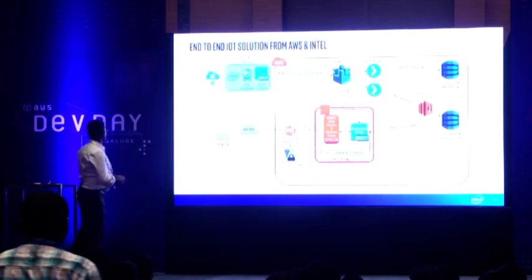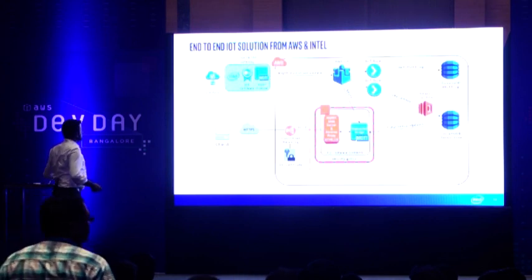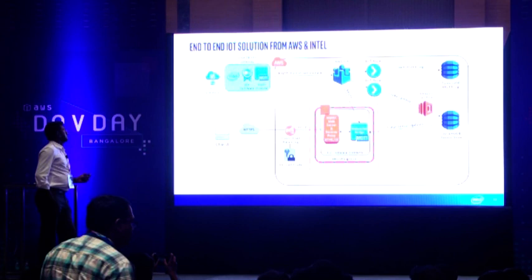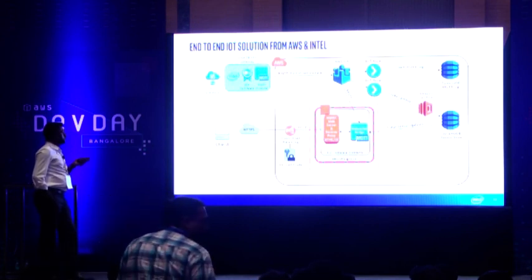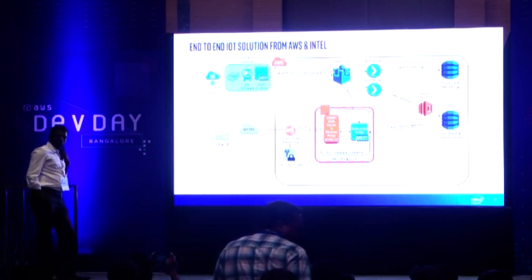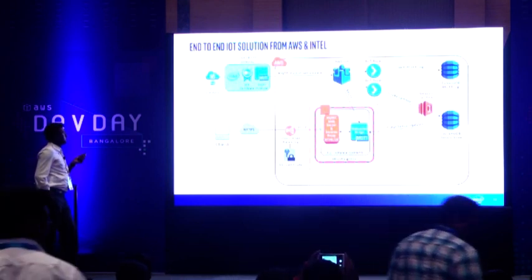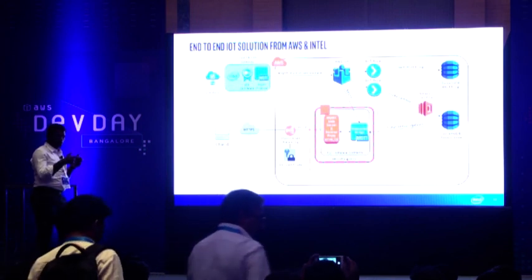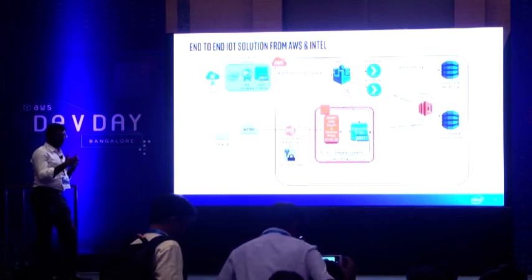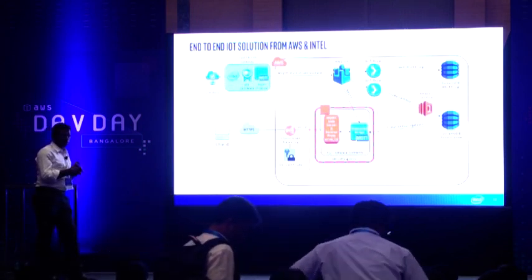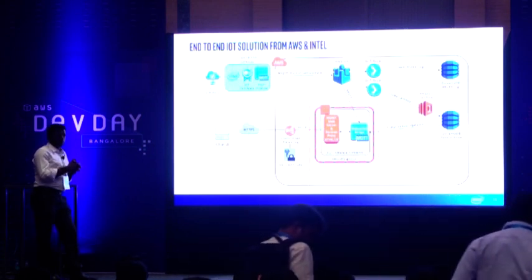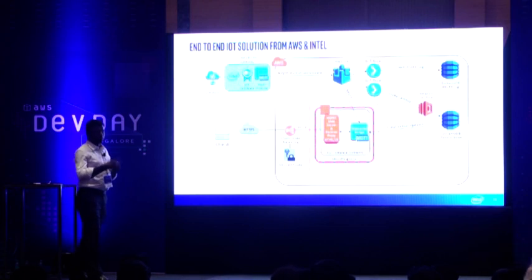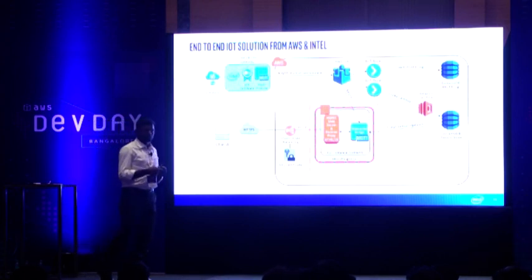This is a typical AWS use case which we have implemented in the manufacturing industry, where we have sensors fitted in a rotary motor. We wanted to measure the temperature of the sensor — the sensor measures the temperature of the motor — and also the revolution, meaning how much vibration it creates from the motor.